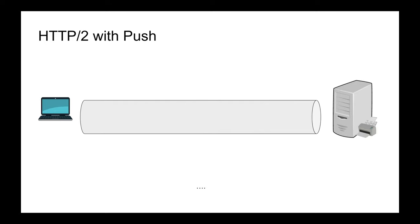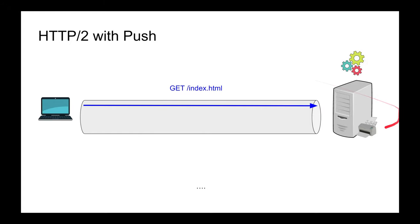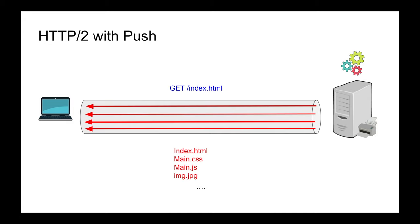HTTP/2 also supports server push, which is not enabled by default. If your server is smart enough and configured correctly, a single GET request for index.html can cause the server to also push main.js, CSS, and images — all together. You can push multiple responses for a single request. However, the client must be configured to listen for server pushes, since traditionally one request yields one response.